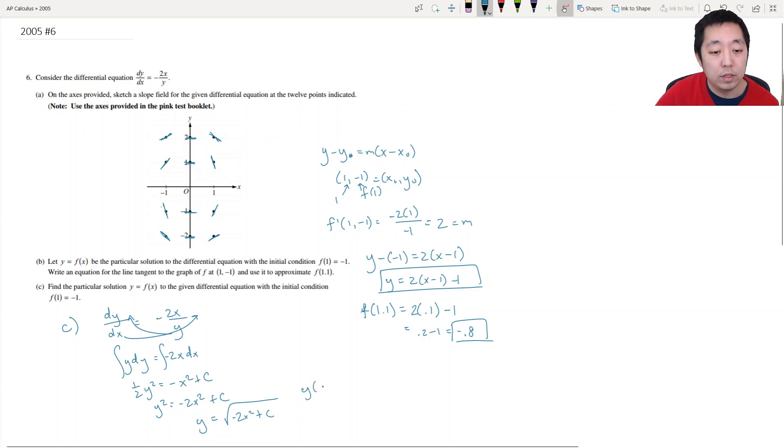And we know y of 1 has to equal negative 1. So when I plug in 1 I get negative 1 equals, oh this should be plus or minus square root I suppose, plus or minus square root of negative 2 plus c. The only way that this could work is if this is negative over here. Okay. Because that's to match that. So that means that tells me 1 has to equal square root of negative 2 plus c. 1 has to equal negative 2 plus c. Or c has to equal 3.